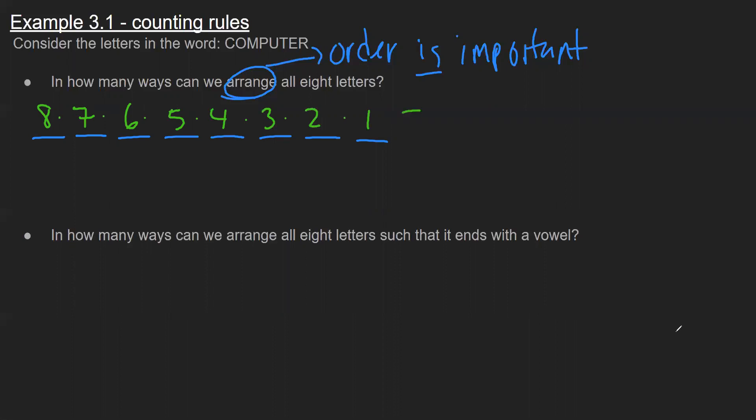And the calculation ends up being eight factorial, which is just this string over here on the left, eight times seven all the way down to one. If I plug that in my calculator, I get 40,320.